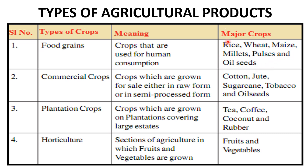Commercial crops are crops which are grown for sale, either in raw form for industries or in semi-processed form. These include cotton, jute, sugarcane, tobacco, and oil seeds.